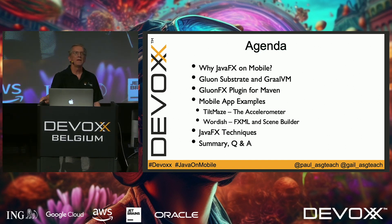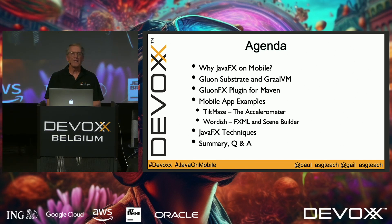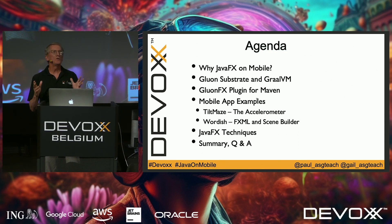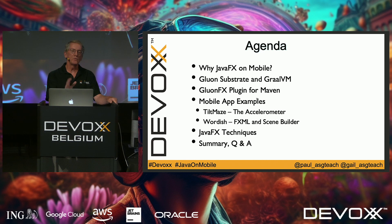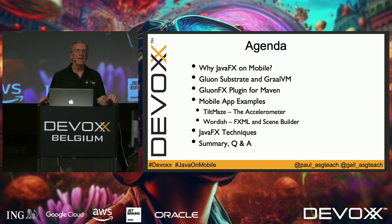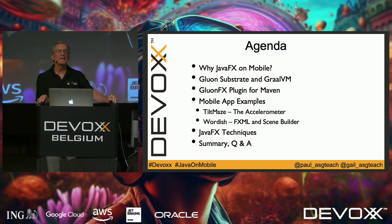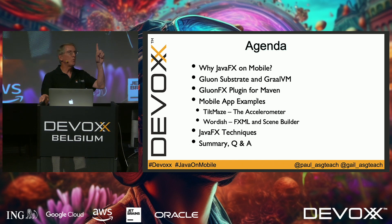Here's our agenda for today. We want to begin by talking about why you'd want to use JavaFX for mobile development. We'll discuss Gluon, a company here in Belgium that provides tools for mobile development — including Gluon Substrate and a Maven plugin. Then we'll use Oracle's GraalVM to generate native images from our Java and JavaFX source code for both iOS and Android, all from one code base.